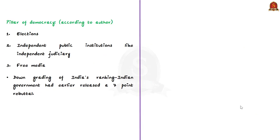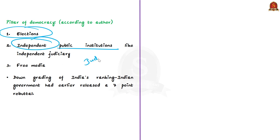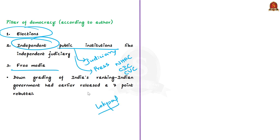The author recounts that elections are not the only pillar of democracy. You cannot claim a country is a true democracy just because there are periodic elections. There should be independent public institutions, particularly an independent judiciary and a free media. Any infringement on the independence of these institutions is a feature of an autocratic state. In the Indian context, these institutions also include the National Human Rights Commission, Central Information Commission, Central Vigilance Commission, and Lokpal. The downgrading of India's ranking has generated both sides — those agreeing with the report and those opposing it, and the Indian government released a seven-point rebuttal.